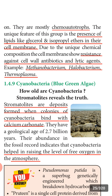Another unique feature is the cell membrane is made up of glycerol and isopropyl ethers. In bacteria, the cell wall is made up of peptidoglycans — carbohydrates and proteins — but here the cell membrane is made up of glycerol and isopropyl. As a result, the cell membrane shows resistance against cell wall antibiotics and lytic agents. Examples of archaebacteria are Methanobacterium, Halobacterium, and Thermoplasma.